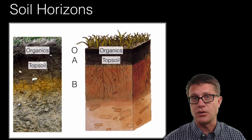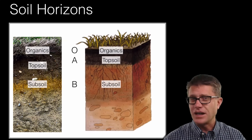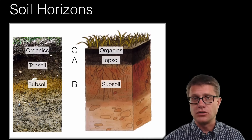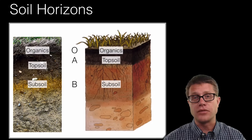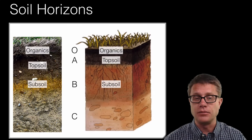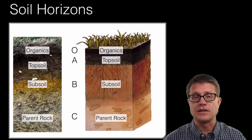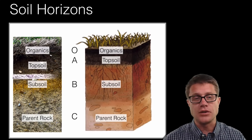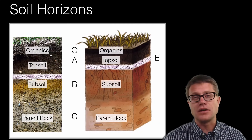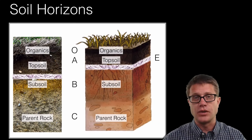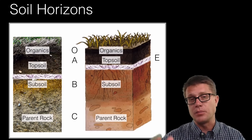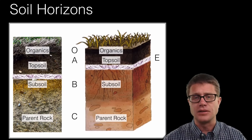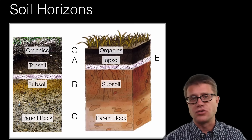As we go below that we are going to have the B horizon, which is the subsoil. Not a lot of organics found in here — we are still going to have minerals and nutrients that are pushed down from the soil layers above. And then finally we get down to the C horizon, and that is going to be where we have parent rock. Now in certain soil horizons we will also have an E horizon, where alluviation is taking place — the movement of water downward is pulling those minerals out and we are just left with sand and silt, kind of a dry layer.